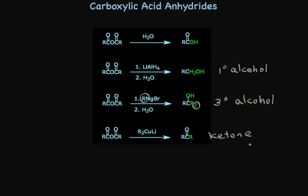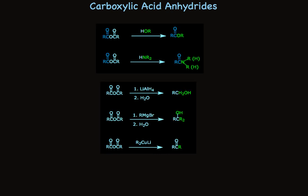To summarize, there are five reactions of carboxylic acid anhydrides that are worth knowing. The two reactions I showed at the top make esters and amides, and they are by far the most common reactions of anhydrides. The three at the bottom are also worth knowing because they offer ways to make primary alcohols, tertiary alcohols, and ketones.